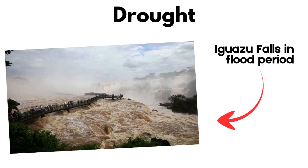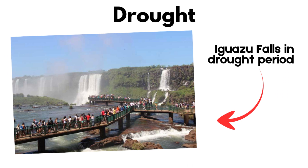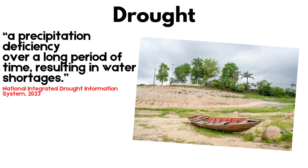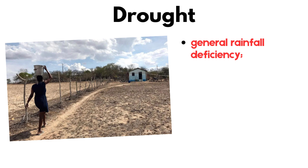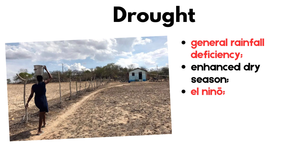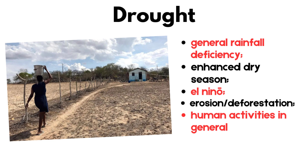Drought. A drought is a period of drier than normal conditions. It is generally defined as a deficiency of precipitation over an extended period of time, usually a season or more, resulting in water scarcity. It can be caused by various factors such as overall precipitation deficiency, environmental climatic conditions that generate few conditions for rain, dry season, the El Niño phenomenon, erosion and human activities, among other reasons.